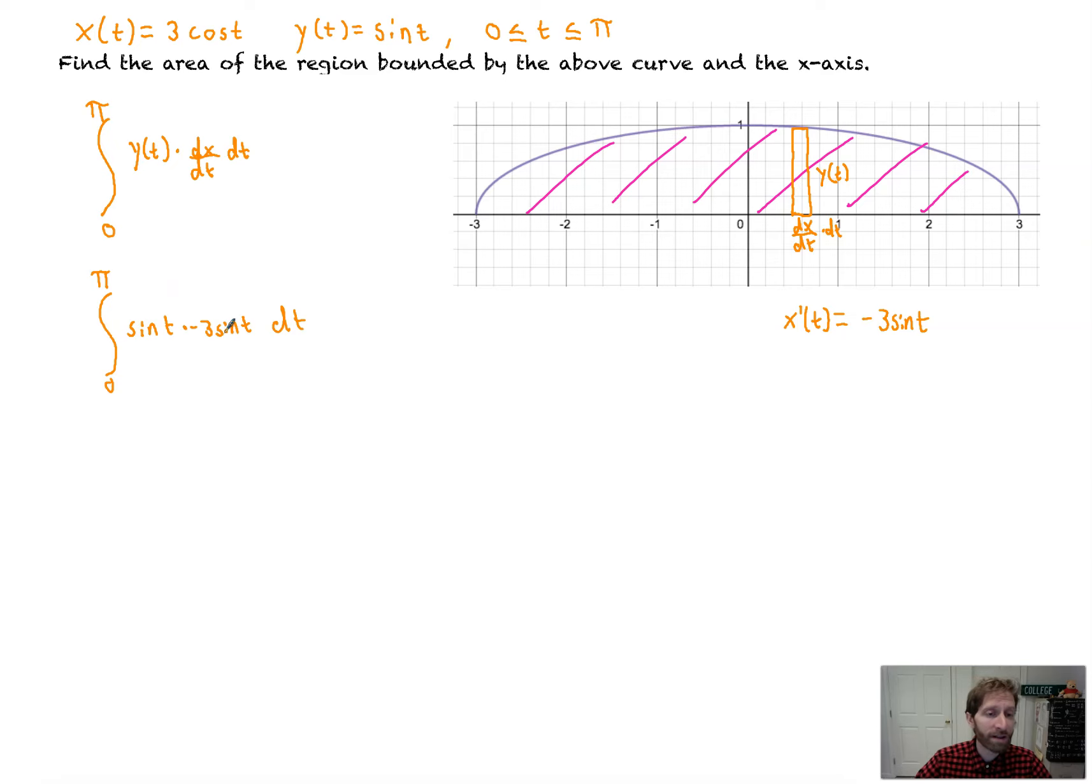Nice indeed. So I'm going to pull out that negative 3, and we're going to end up with the integral from 0 to π of sin²(t) dt. That's it.